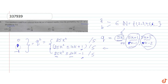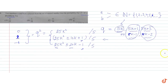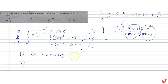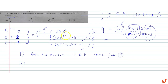So squares of natural numbers leave remainders 0, 1, or minus 1 when divided by 5. Let me call set A the numbers of the form 5k. Case 1: both numbers a and b come from set A. The probability of picking a number from set A is 1 by 5 for each, so the probability for this case is 1 by 25.